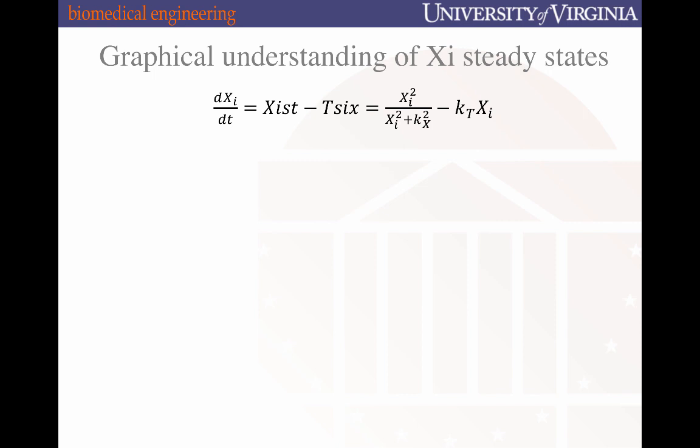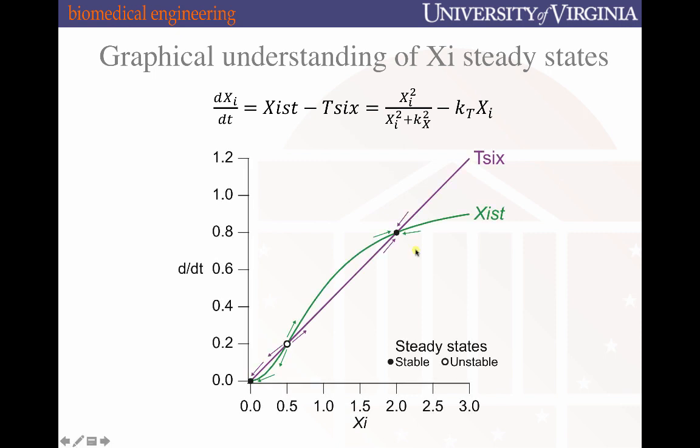We can examine this graphically by returning to the rate equation and breaking it down according to the competing influences of Xist and Tsix. Steady states arise in this equation when Xist production is completely balanced by Tsix production, when these two subtracted from one another equals 0. This is equivalent to when the two curves intersect on a rate of change versus Xi plot depicted here. The green trace describes the rate of production of Xist per unit time, so this term here as a function of Xi. And then the Tsix production is similarly shown as a line whose slope is determined by K sub t. They're plotted relative to one another because only when these two curves intersect, these are the steady states of the system.